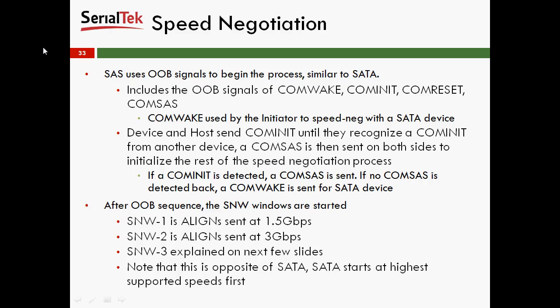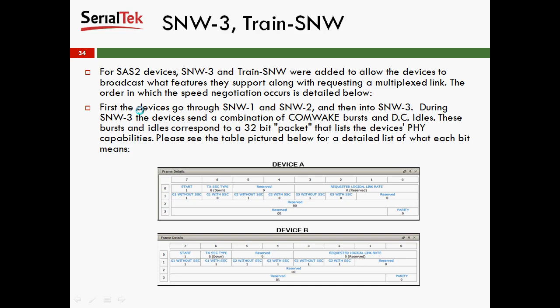Note that this is the opposite of Serial ATA — in Serial ATA, the device starts out by sending the highest supported speeds first, and then the host responds with its highest supported speeds. For SAS-2 devices, SNW-3 and Train-SNW were added to allow devices to broadcast what features they support, along with requesting a multiplexed link.